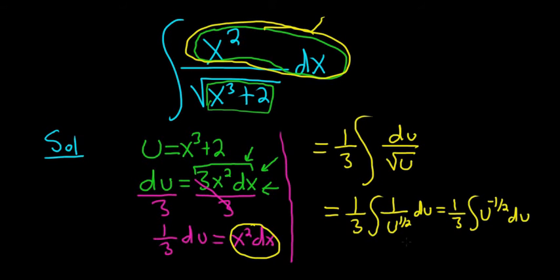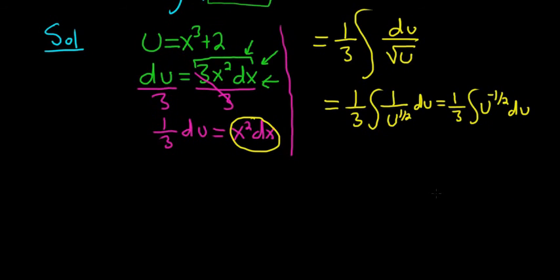Whenever you have something to a power, as long as that power is not -1, you can use the power rule. That basically says you add 1 to the exponent and divide by the result. So we have 1/3 times u, adding 1 to the exponent. Negative 1/2 plus 1 is 1/2, because 1 is the same as 2/2. So this is u^(1/2).